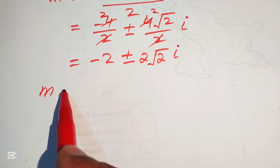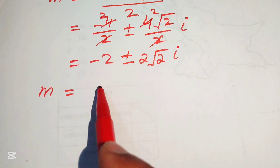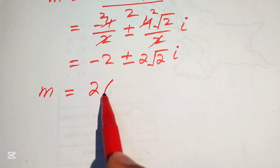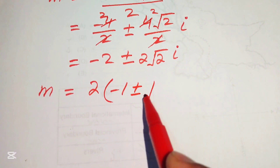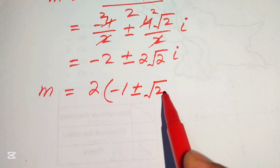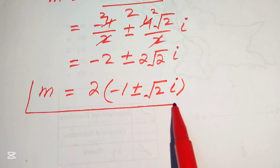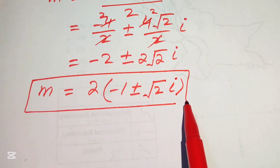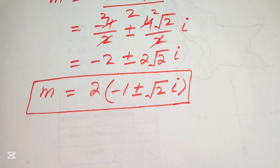Finally, taking 2 as common, the other two complex values of m are 2 times minus 1 plus or minus square root of 2 iota. These are the other two complex values of m. This is the final answer. Thank you so much for watching this video — please subscribe to my channel for more exciting videos.